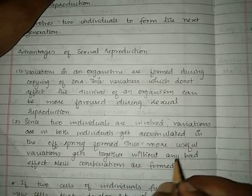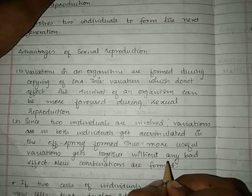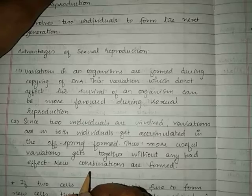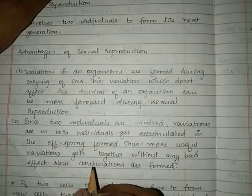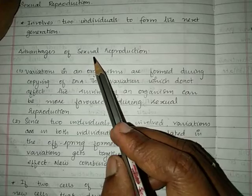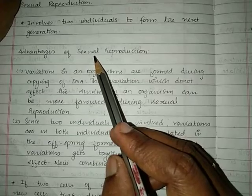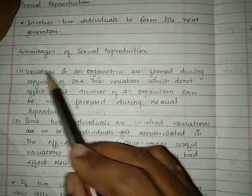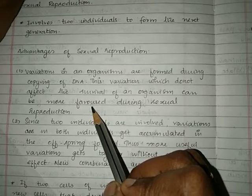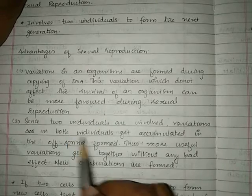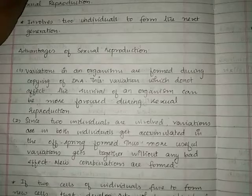The variations from both individuals are going to get accumulated in the offspring. If these variations are going to be useful, new combinations of variations can be formed. So the main advantage of sexual reproduction over asexual reproduction is that variations are more favored, and the variations of both individuals get accumulated in the offspring.